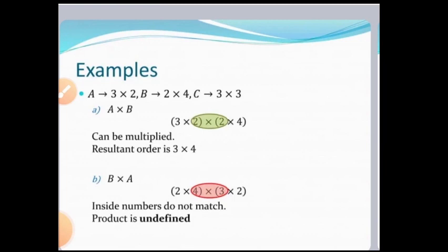A is a 3×2 matrix, B is a 2×4 matrix, and C is a 3×3 matrix. Suppose we have to find A×B: that is 3×2 and 2×4. Here the columns of the first matrix equal the rows of the second matrix, so the condition is satisfied. Therefore we can multiply these two matrices, and the resultant matrix has the order 3×4.